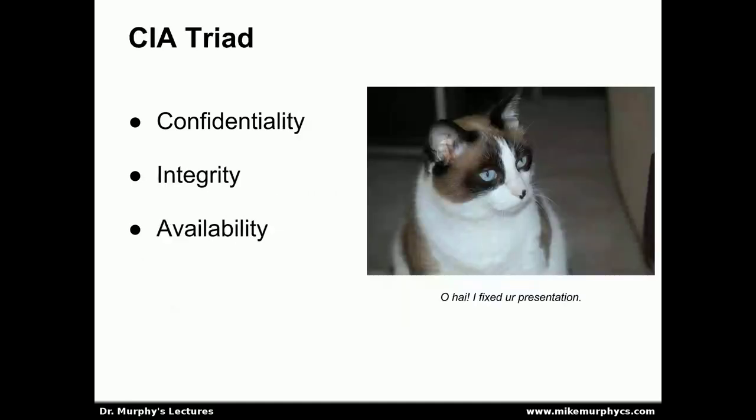These three principles form what's called the CIA triad in security, which stands for confidentiality, integrity, and availability. In an information system, we are especially concerned with these three things: ensuring the confidentiality of the system and the data on it, the integrity of the data and the system itself, as well as the availability of that system to legitimate users. We don't mind denying availability to illegitimate users, but we want to maintain availability for legitimate users.